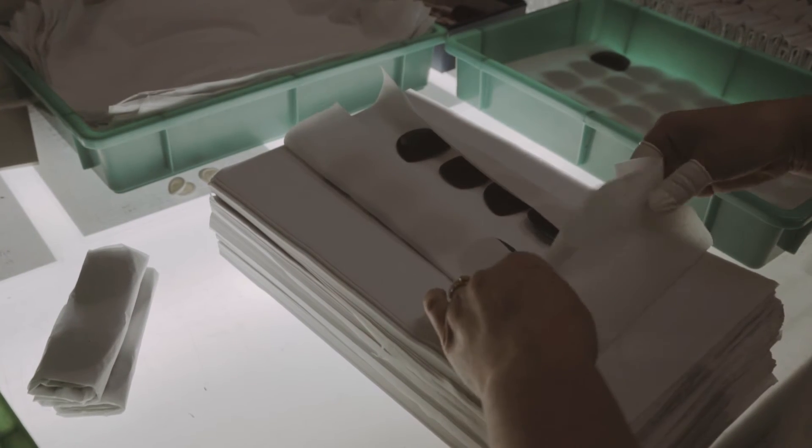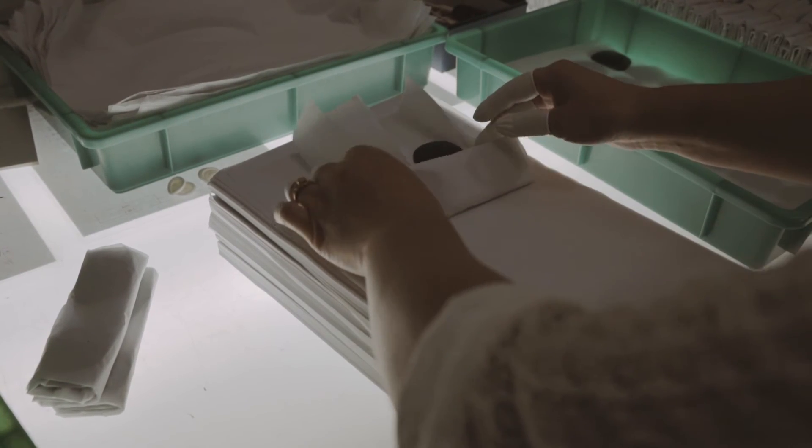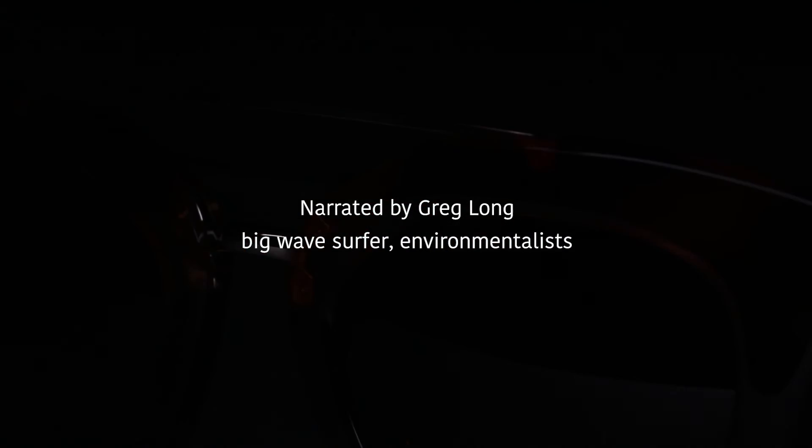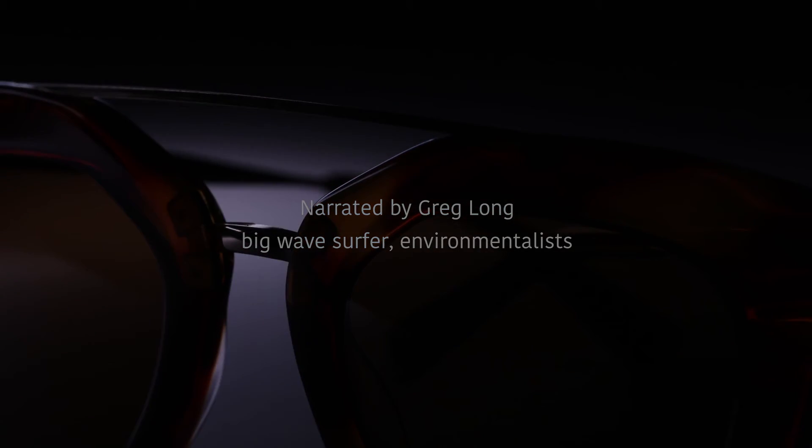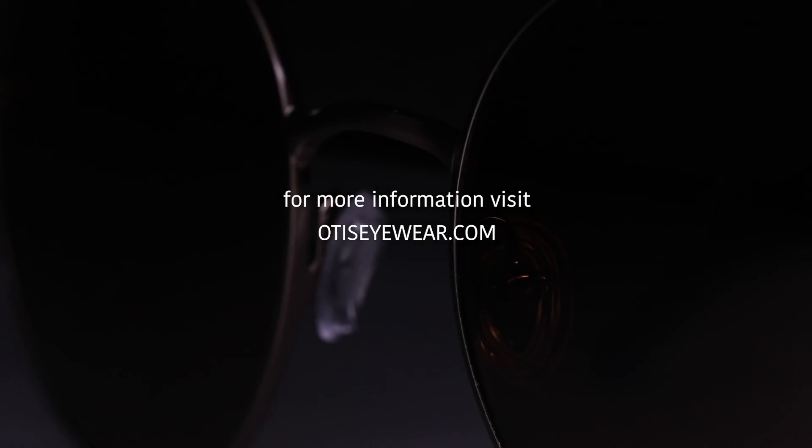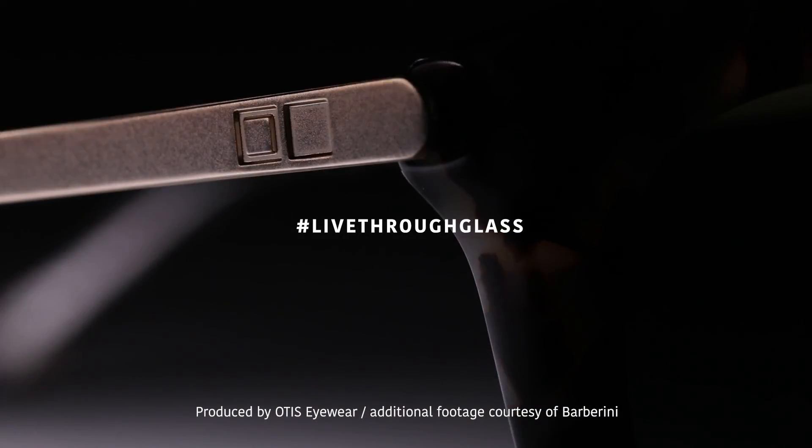As stewards of the earth, we should all be practicing environmentally conscious habits every day. A good place to start when it comes to eyewear is purchasing those that use mineral glass. A superior lens material compared to plastic and polycarbonate lenses, mineral glass is sourced from natural elements like sand and soda ash. These elements are endlessly recyclable and harmless to humans and animals alike.